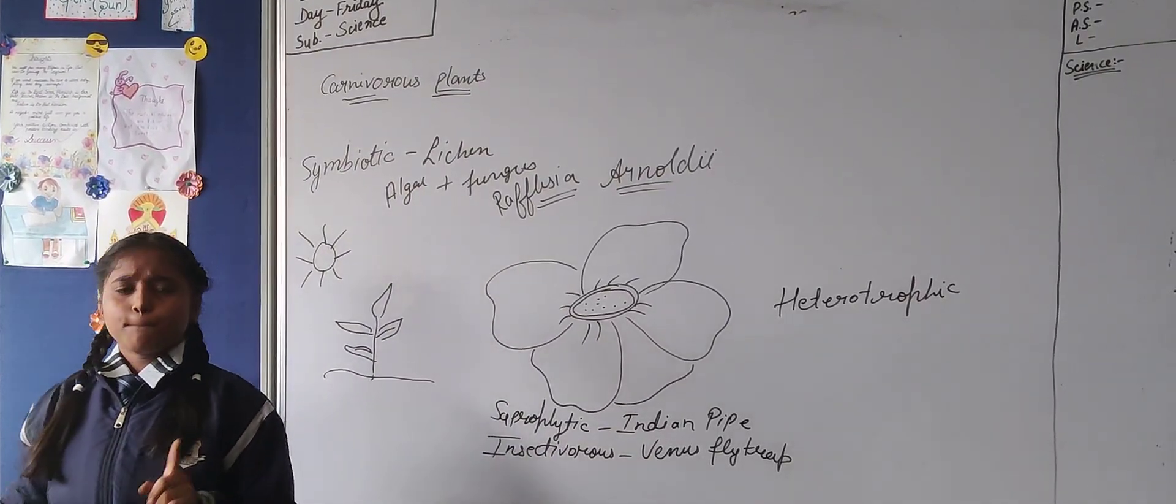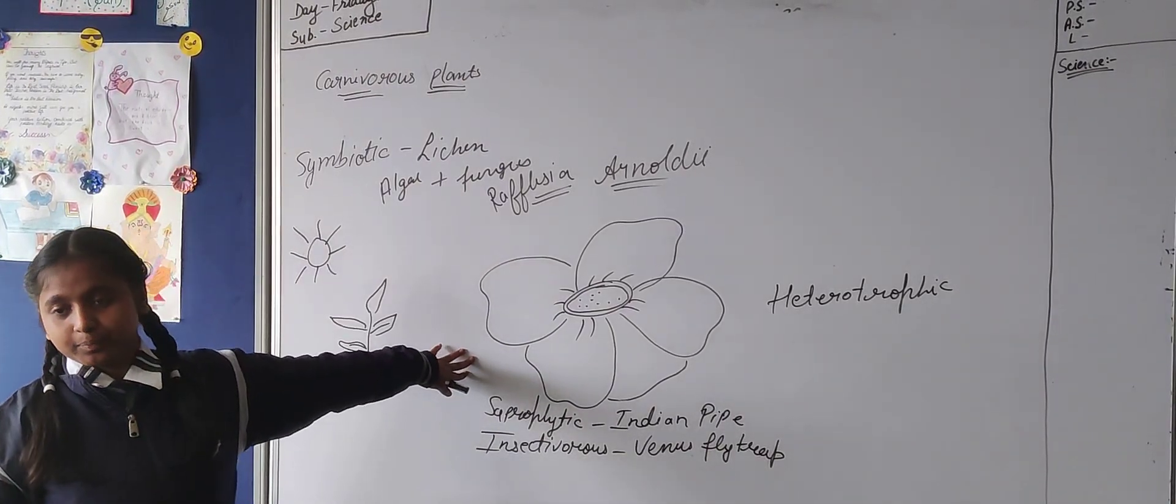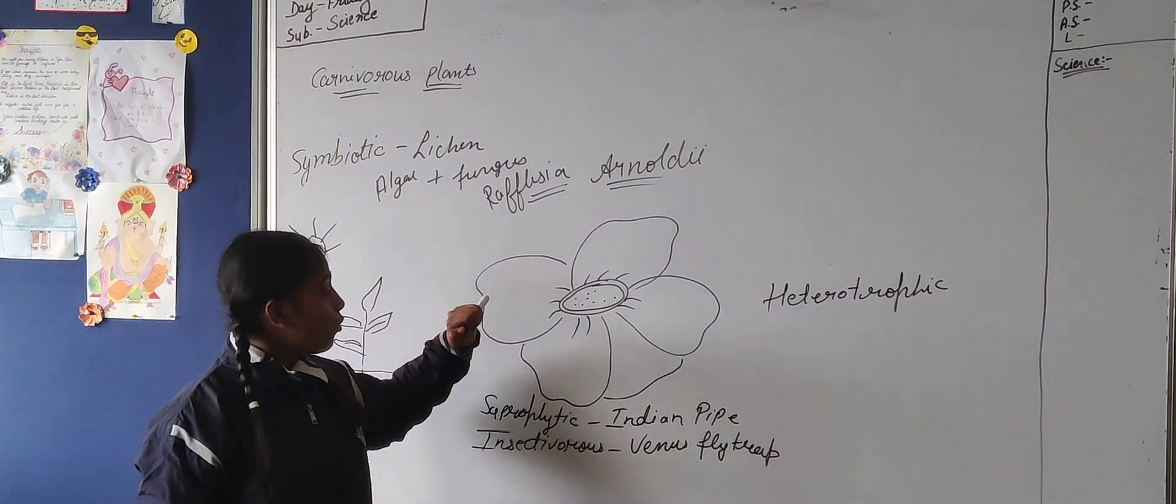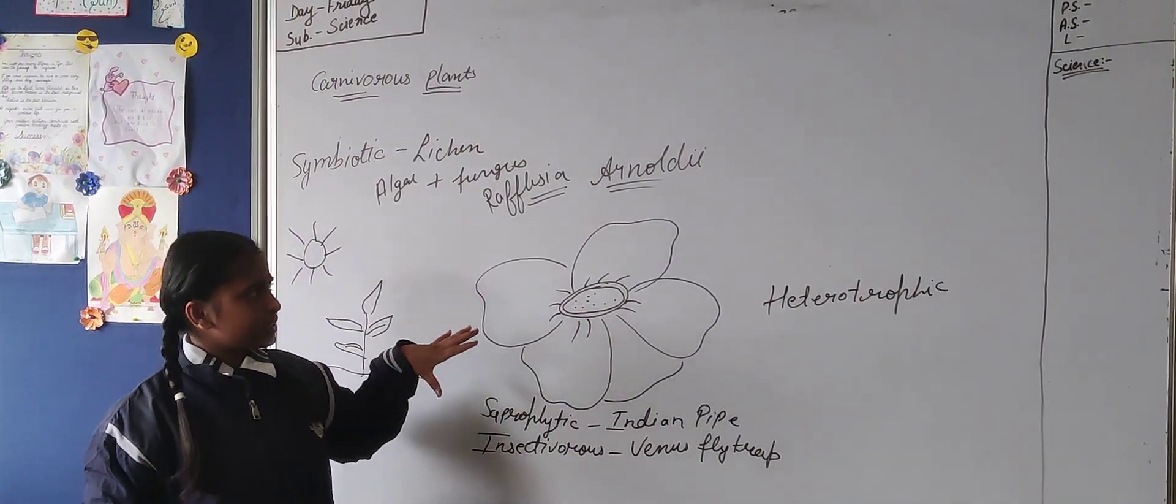Last but not least, parasitic plant. Rafflesia. Rafflesia is a plant which have lack of chlorophyll and a flower-like structure.